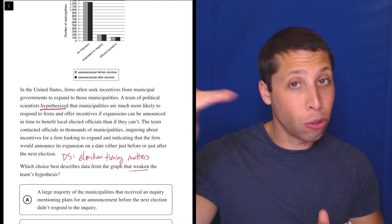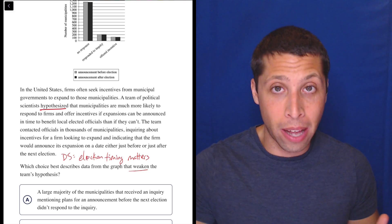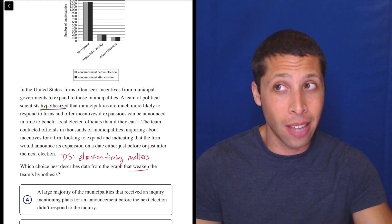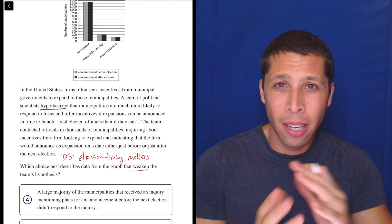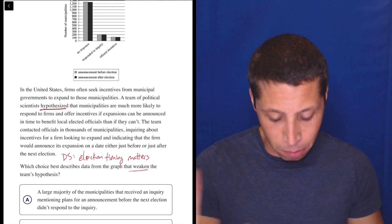A team of scientists hypothesized that municipalities are much more likely to respond to firms and offer incentives if expansions can be announced in time to benefit local elected officials than if they can't. Meaning you get closer to the election, you're going to have, what does it say? More likely to respond. So the likeliness of response is dependent on the timing of the election. That is what that sentence is saying. I don't care so much about the direction because I'm about to dumb summary this thing away. So let me show you.